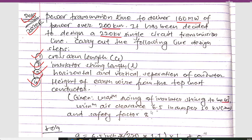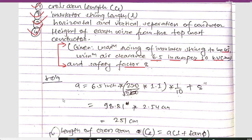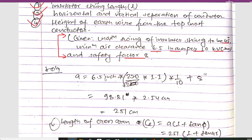We are given the maximum swing of the insulator string as 45 degrees, minimum air clearance as 6.5 inches per 10 kV RMS, and safety factor as 8. Sometimes these parameters will not be given in the question, so in that case we have to remember these values. To calculate the value of A, we use A equals 6.5 inches.